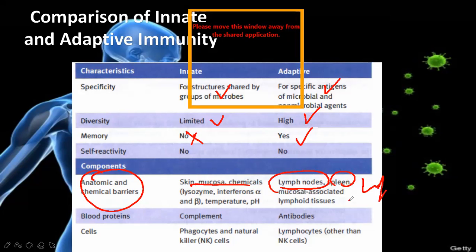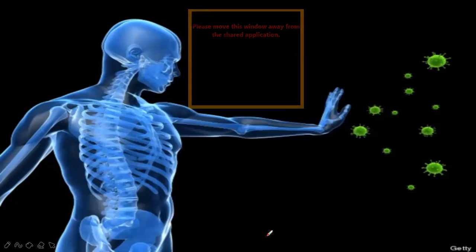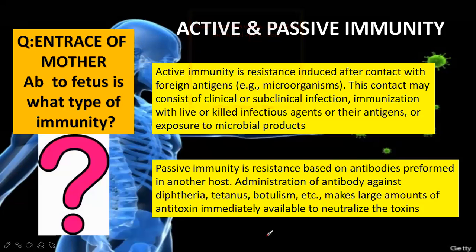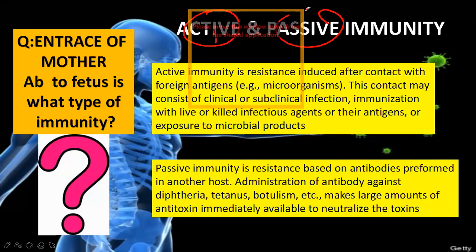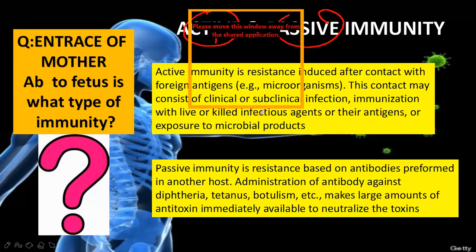The anatomical components include skin and mucosa. The cell components include phagocytes — macrophages, neutrophils, natural killer cells — and importantly lymphocytes. This is the innate and adaptive immunity. What is active and what is passive? Clear so far on innate and adaptive?